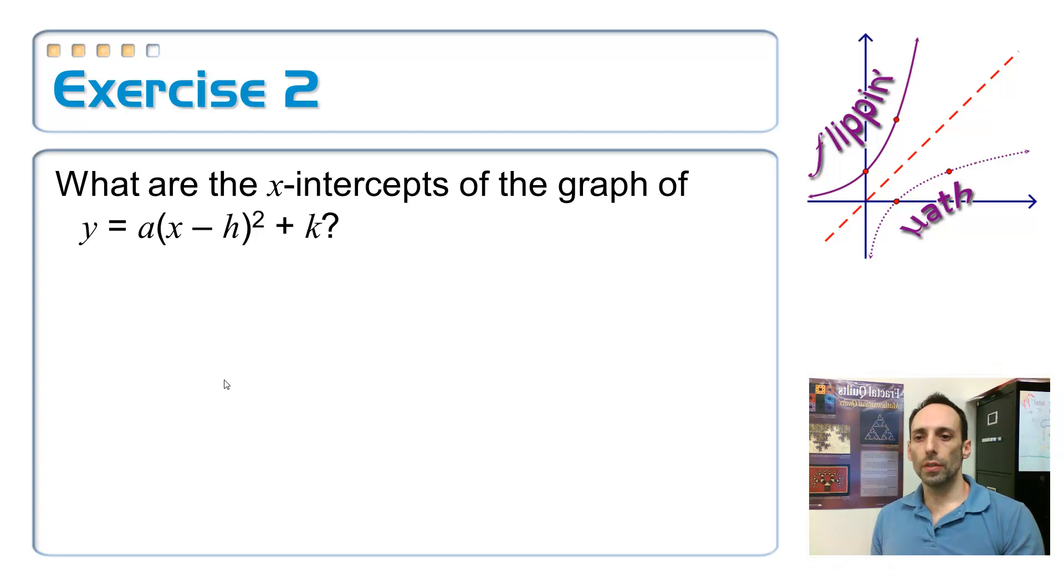What are the x-intercepts of that equation when it's in vertex form? Just like before, I'll draw myself a graph. If I have points on the x-axis, the y-coordinates are always zero. So I'm going to plug in zero for y, and then a times x minus h squared plus k.